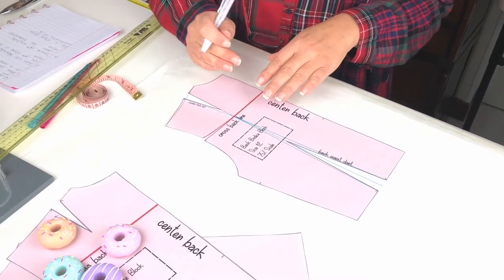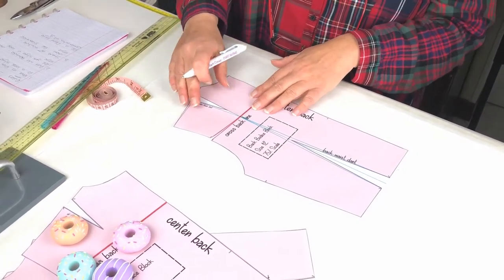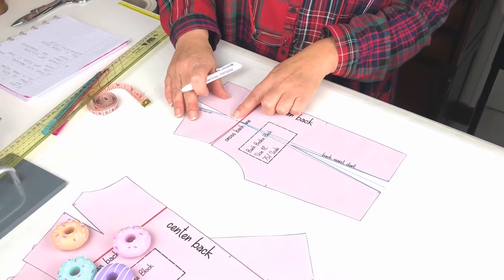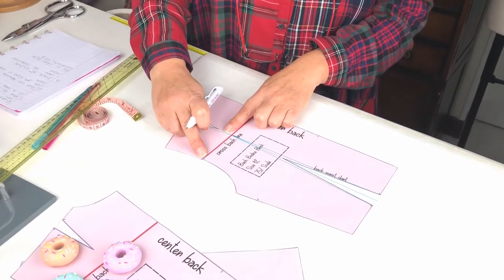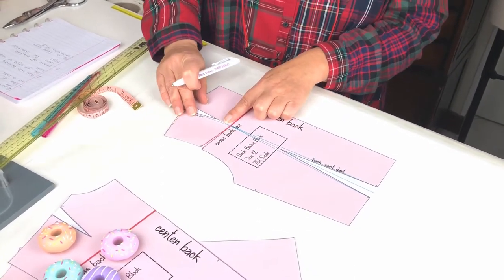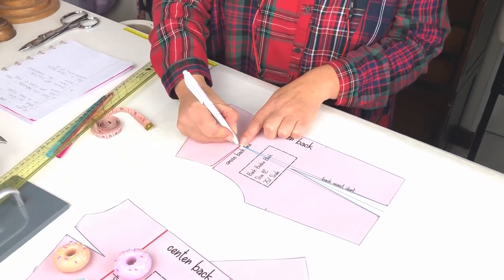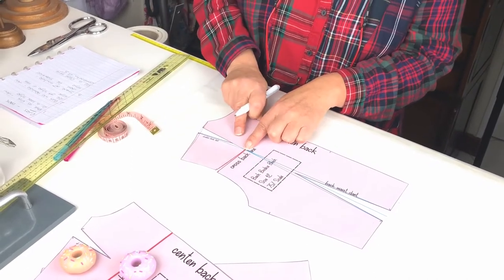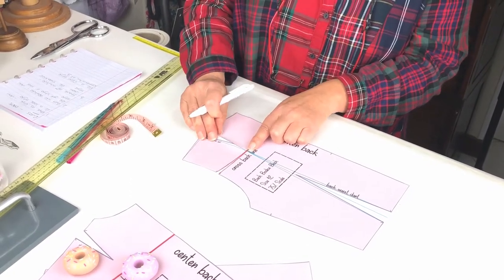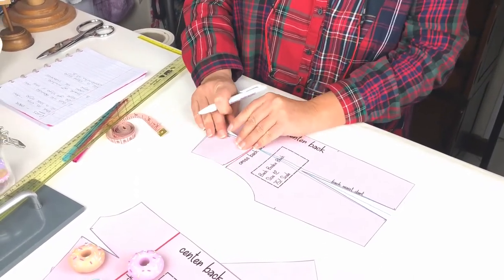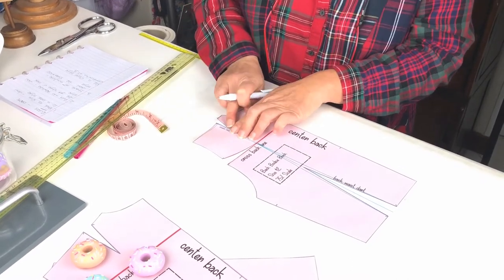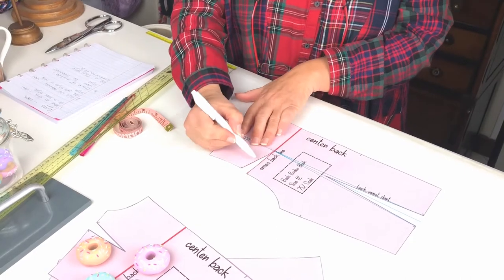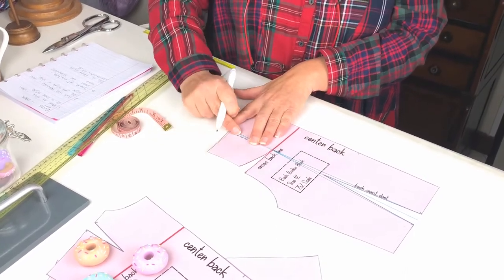The second option is to pivot the shoulder blade dart into the armhole here and for that what we do is we slash in from here to the point of the extended dart and all I'm going to do is just crease this and fold in the dart and there you can see that the dart has been moved from the shoulder to the armhole.